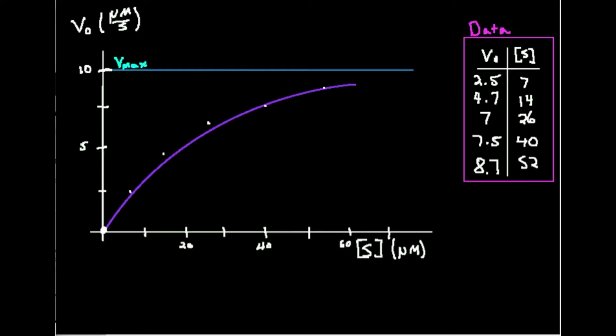In this video, we are going to talk about how to plot a Michaelis-Menten curve. Here you already see it's technically plotted, but I'm going to discuss the theory of how you would do this. I'm going to write the Michaelis-Menten equation: the initial rate of an enzyme is equal to Vmax, the maximum rate of the enzyme, times the substrate concentration, divided by Km plus the substrate concentration.